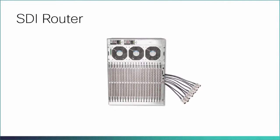Today the broadcast industry uses an SDI router and SDI cables to transport video and audio traffic. SDI cables can carry only a single unidirectional signal. As a result, a large number of cables, frequently stretched over long distances, are required, making it difficult and time-consuming to expand or change an SDI-based infrastructure.